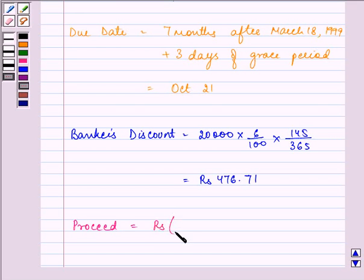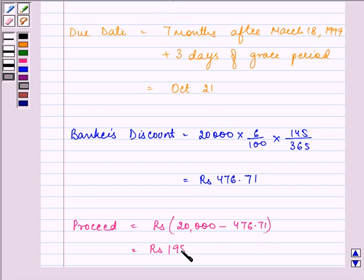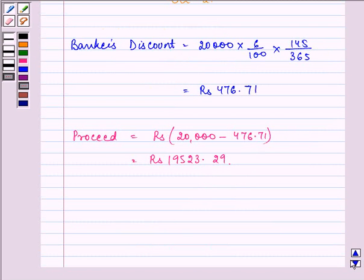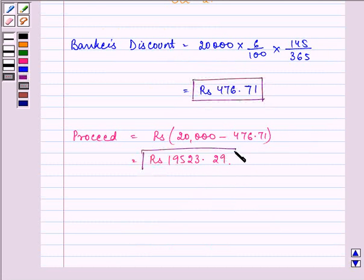The proceeds that we will be getting will be Rs. 20,000 minus the banker's discount, which is equal to Rs. 19,523.29. These two are the required answers to the given question. Hope you understood the whole concept well and enjoyed the session too. Have a nice day.